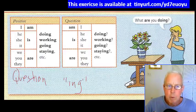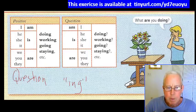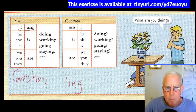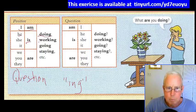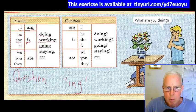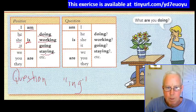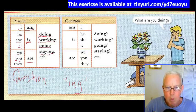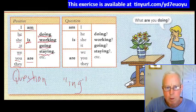So let's read through the structure here. We have to review last time's statement form: I am doing. He is working. She is going. It is staying. We are doing. You are working. They are going or staying or any ING verb.